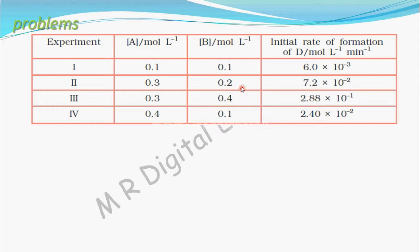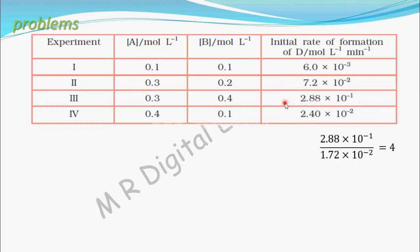The concentration of B is increased two times, from 0.2 to 0.4. Since concentration of A is kept constant, the rate changes only with respect to B. The rate increases from 7.2 × 10⁻² to 2.88 × 10⁻¹. Dividing 2.88 × 10⁻¹ by 7.2 × 10⁻² gives 4. So the rate increased four times.